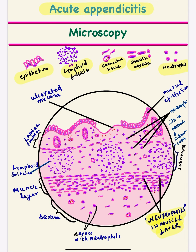Hello and welcome again. In continuation with the last lecture in which I taught you about acute appendicitis — the acute inflammation of the appendix — I will tell you how to draw the microscopic diagram of appendicitis step by step. For that, you need to know a few basic points, first the normal histology of the appendix.